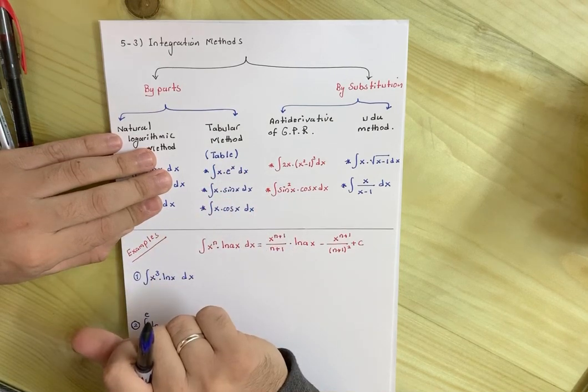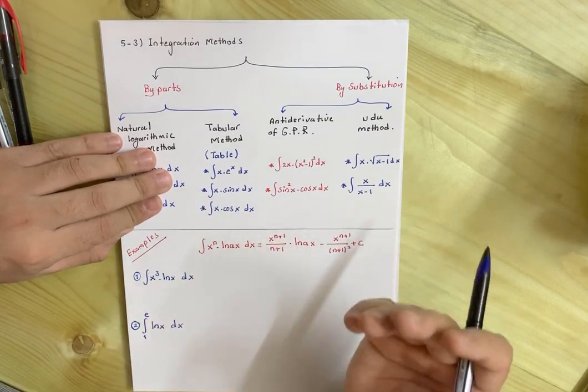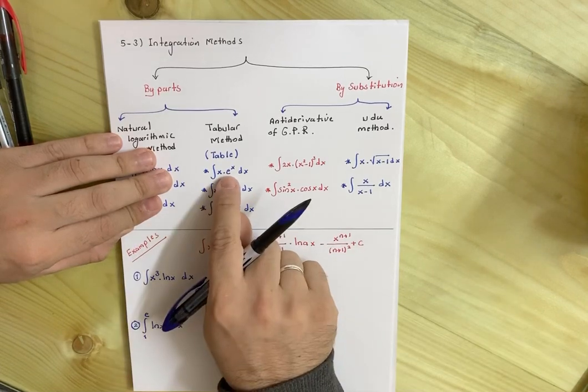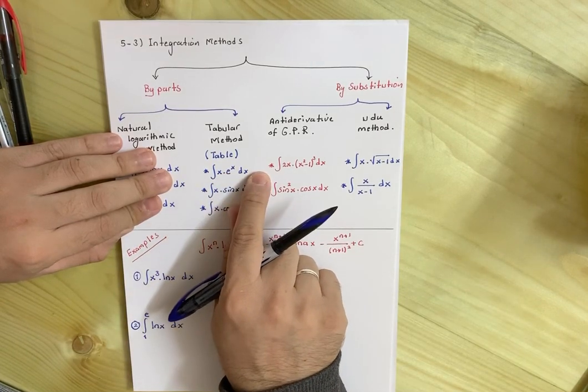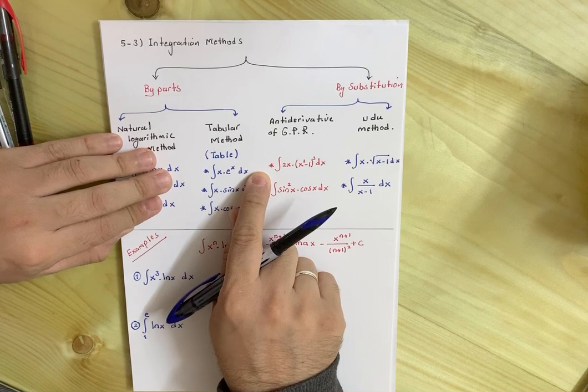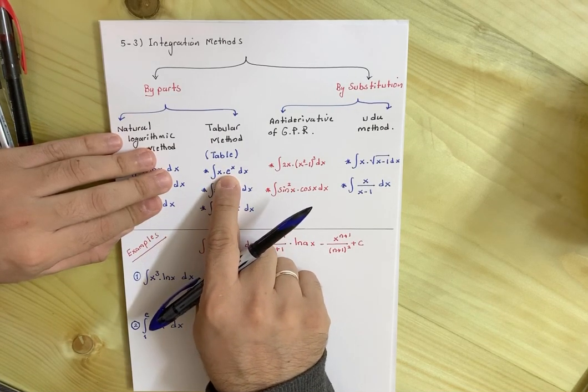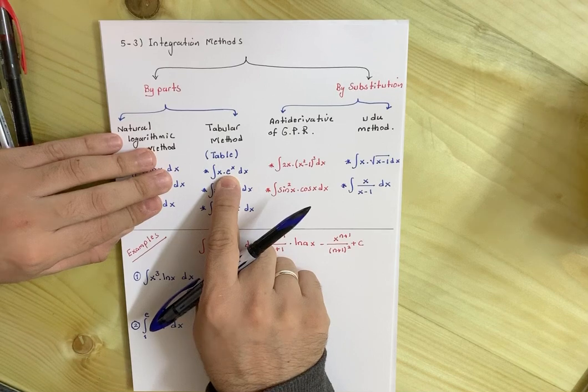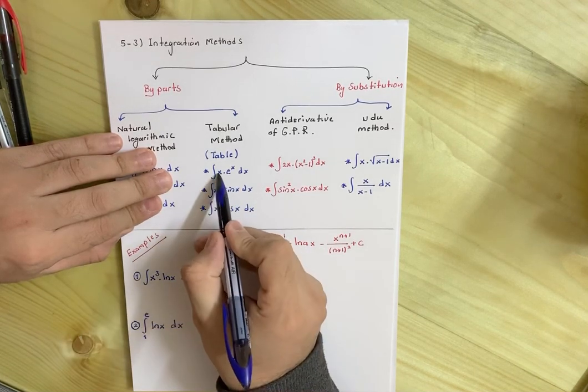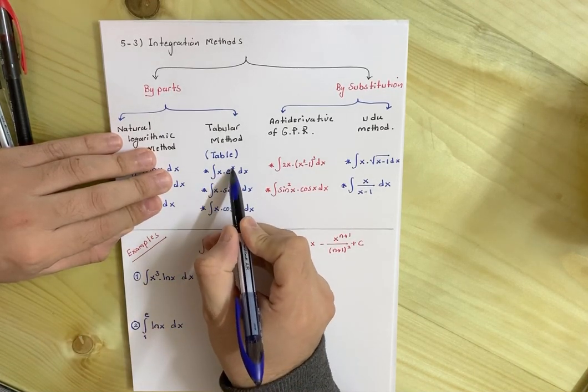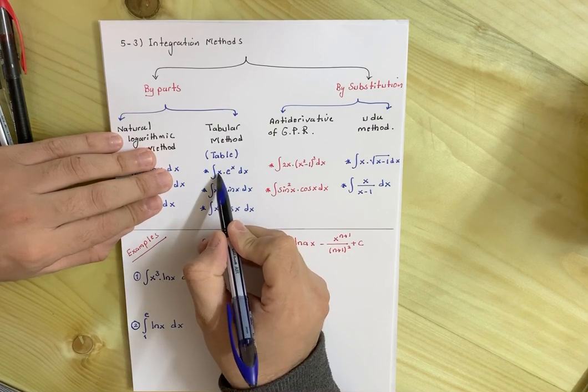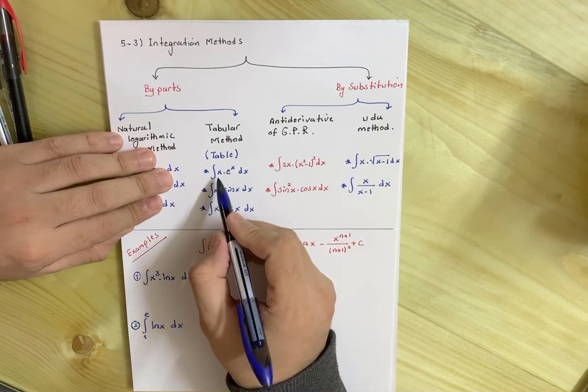If you see such a question: integral x times e to the power x dx. Actually, we learned to say that when we see e, the answer is equal to itself, but here no. Why? Because the function that was multiplied by the natural exponential function must be equal to the derivative of its power, but derivative of power is one, this is x. So it means you cannot solve this one by direct method.